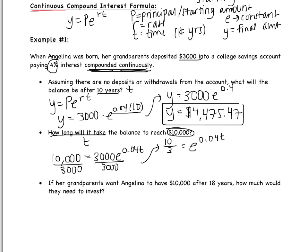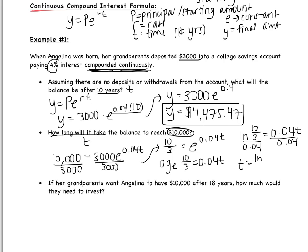Converting to log form: log base E of 10/3 equals 0.04T. But remember, we don't write log base E — we write natural log. So this becomes: the natural log of 10/3 equals 0.04T. Since 0.04 and T are being multiplied, I divide both sides by 0.04. So T equals the natural log of 10/3 divided by 0.04.